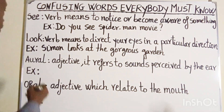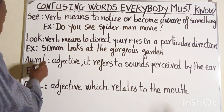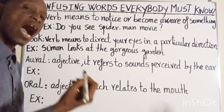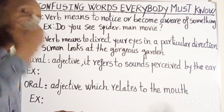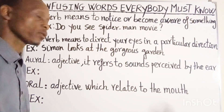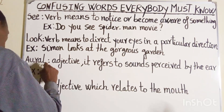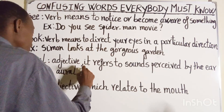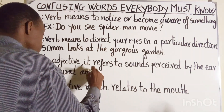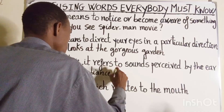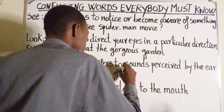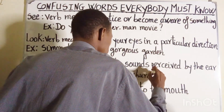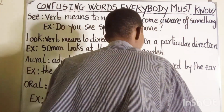'Aural', spelled A-U-R-A-L, is an adjective which refers to sounds perceived by the ear. Here, let's get an example: 'The aural ambiance of the church is breath-taking.'